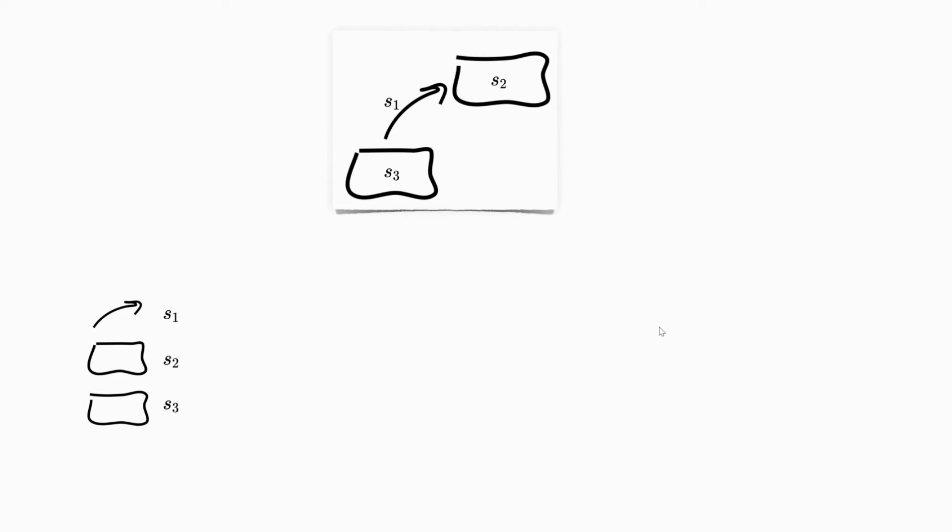The variable length strokes are then projected onto a fixed-dimensional embedding space. Here we want to capture only the local information about the strokes, such as the size, shape, or the curvature.